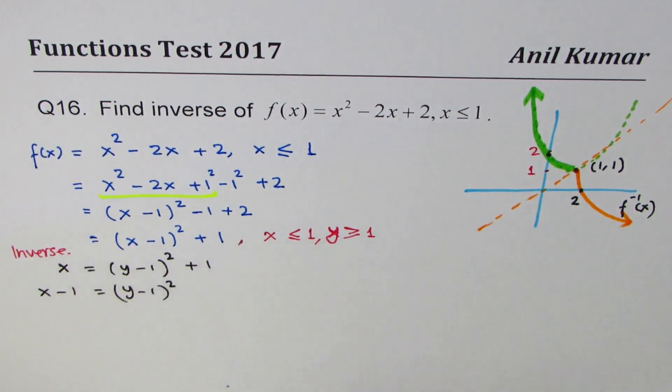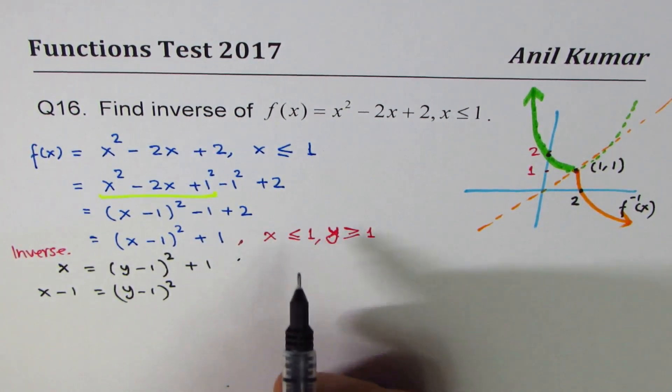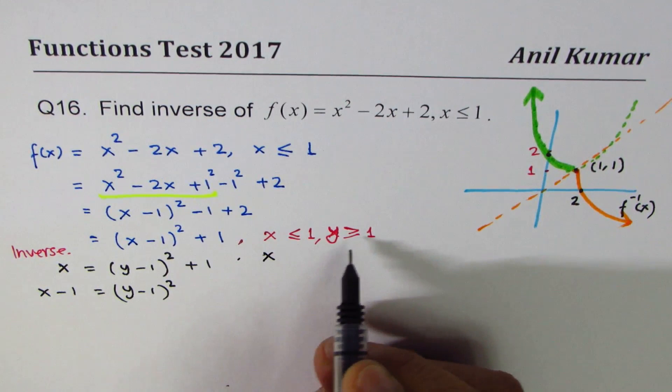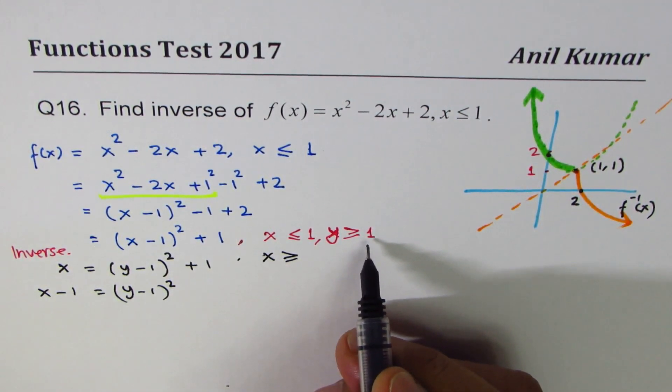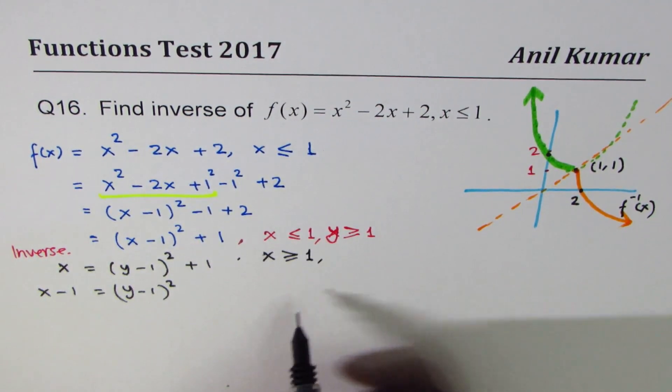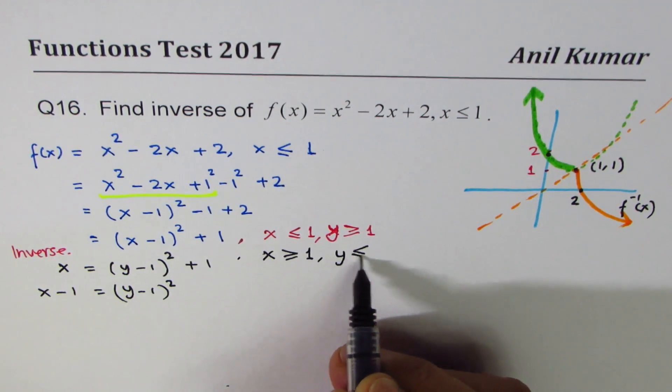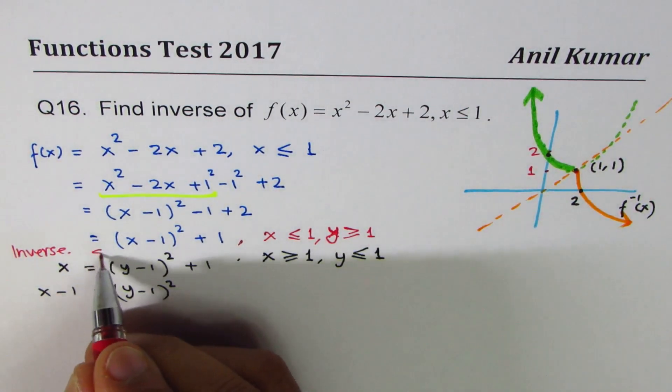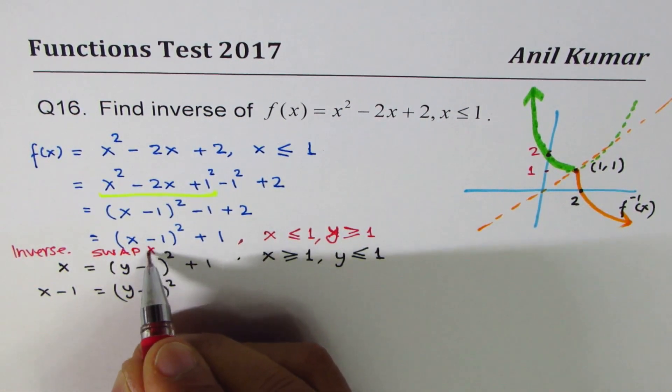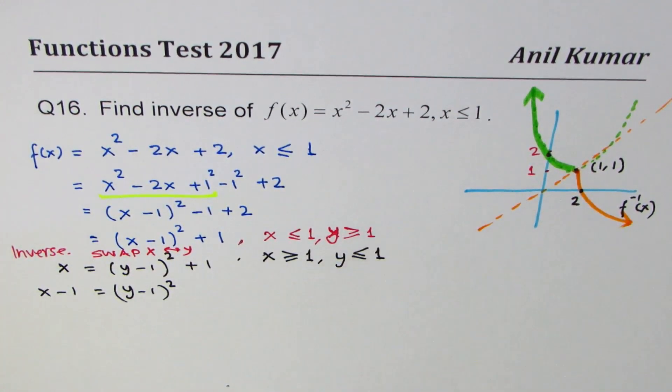If you find the inverse, then in the inverse what do you expect? These will change. For the inverse, x should be greater than or equal to 1, and y will become this. For the inverse we swap x and y. The domain and range also swap. This is very important to understand.